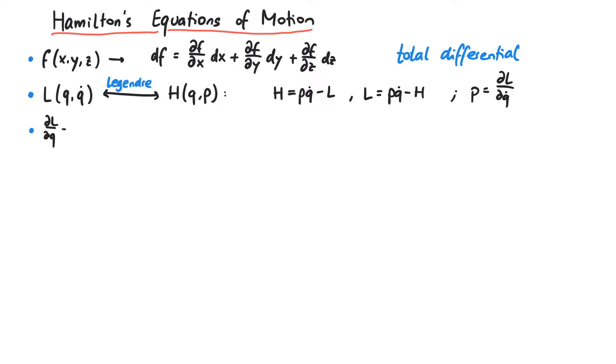And finally, we will also need the Euler-Lagrange equations later on. Now let's start with the Hamiltonian equations of motion. Using the Legendre transformation of the Lagrangian, the Hamiltonian can be written as pq-dot minus the Lagrangian.